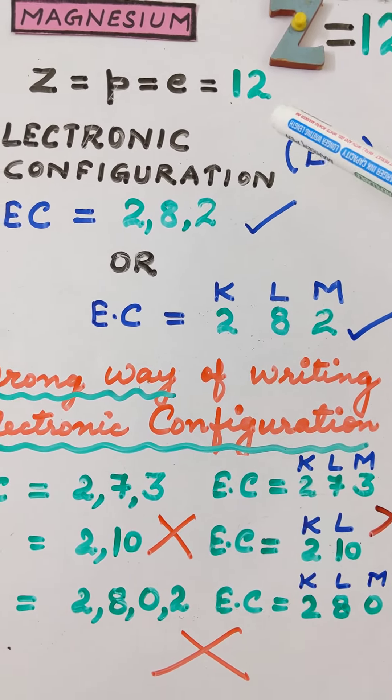To write the electronic configuration, we need to take care of the first two rules: the maximum number of electrons to be filled in any shell, and that electrons are filled in a stepwise manner. Therefore we put 2 electrons in the K shell, since the maximum capacity of the K shell is 2. Then we put 8 electrons in the L shell, because the maximum capacity of the L shell is 8.